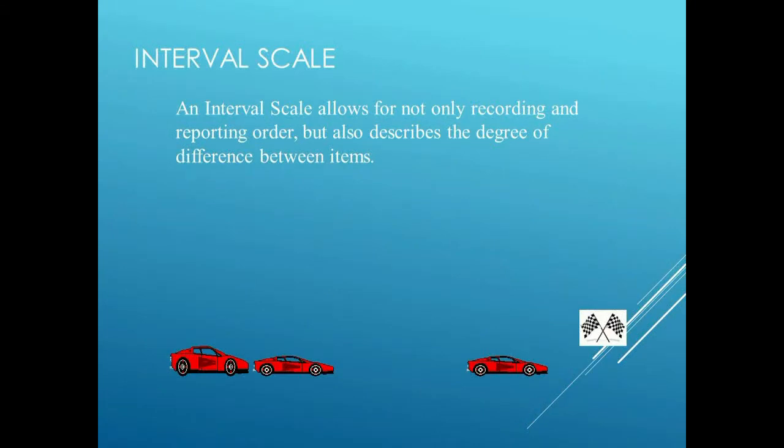The third type of scale is the interval scale. The interval scale builds on the ordinal scale by also giving you an order — first, second, third — but it additionally provides an idea of the scale of the order. For example, the first place finisher might come in way ahead of second, while second and third are very close together. In a car race, the first car might be six car lengths ahead of second, while second and third were simply a car length apart. This gives us an indication of the scope by which each position was won.